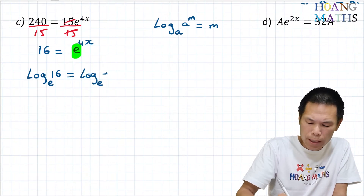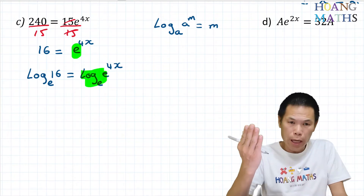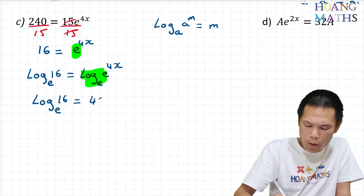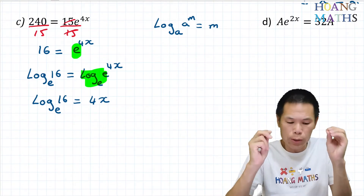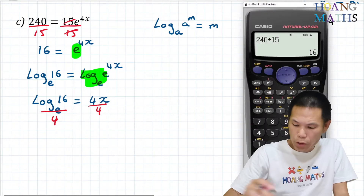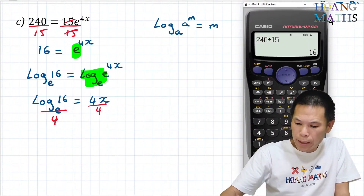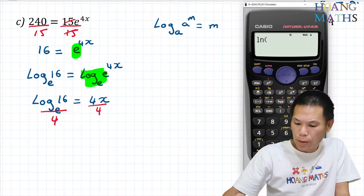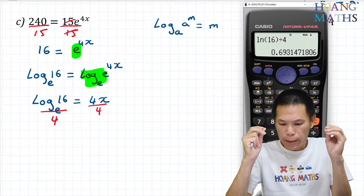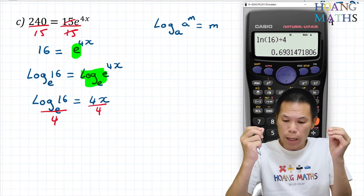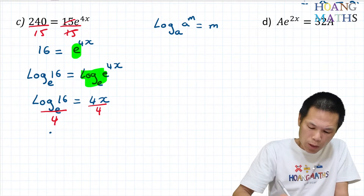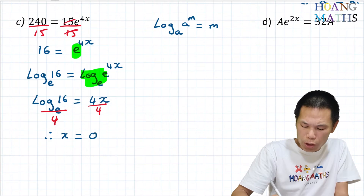So log base e of 16 equals log base e of e to the 4x. These two cancel out, so log base e of 16 equals 4x. To solve for x, divide by 4 on both sides. Log base e of 16 is the same as ln(16), divided by 4. That gives 0.693. The number after 9 is 3, less than 5, so the answer is x equals 0.69.